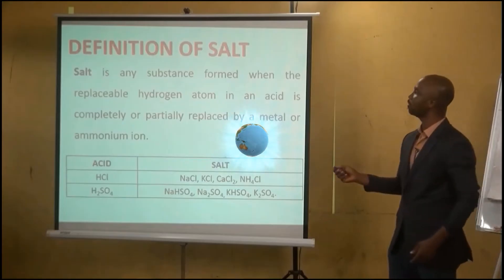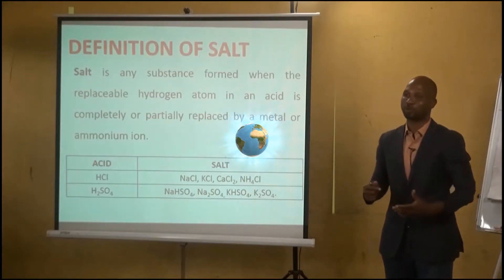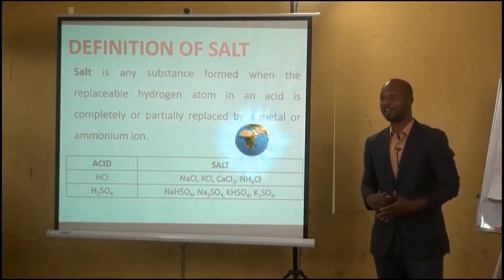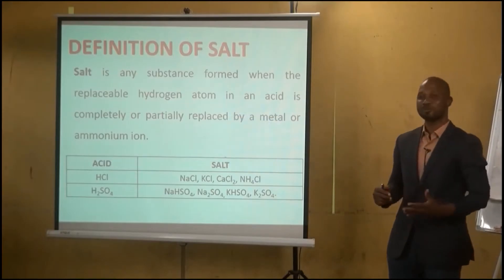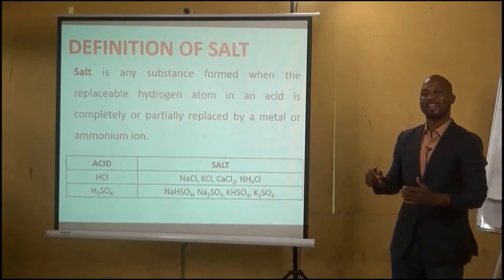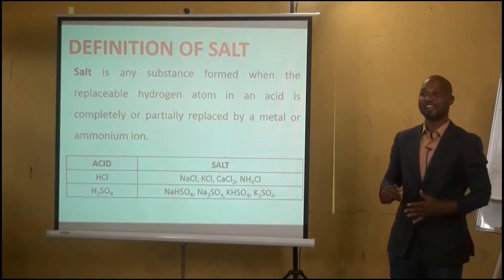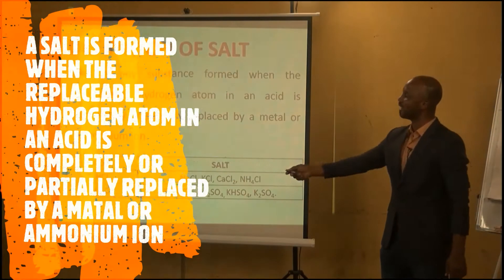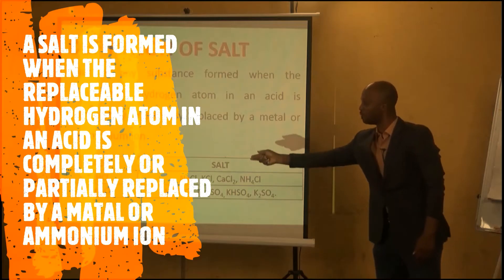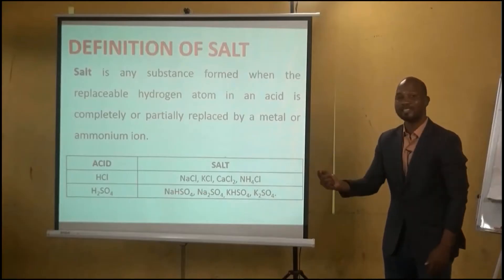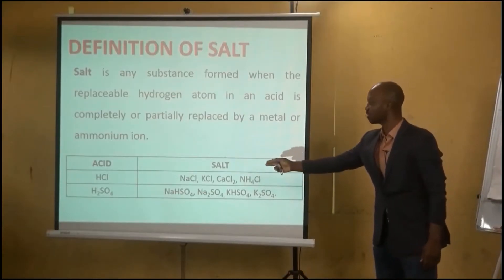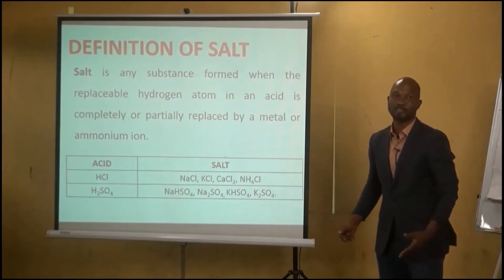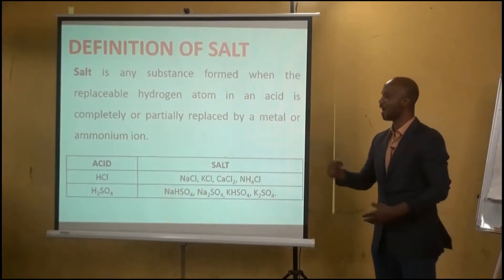A salt is any substance that is formed when the replaceable hydrogen atom in an acid is completely or partially replaced by a metal or ammonium ion. For example, in HCl (hydrochloric acid), when you replace the hydrogen with a metal — sodium gives sodium chloride, potassium gives potassium chloride, calcium gives calcium chloride, and ammonium gives ammonium chloride.